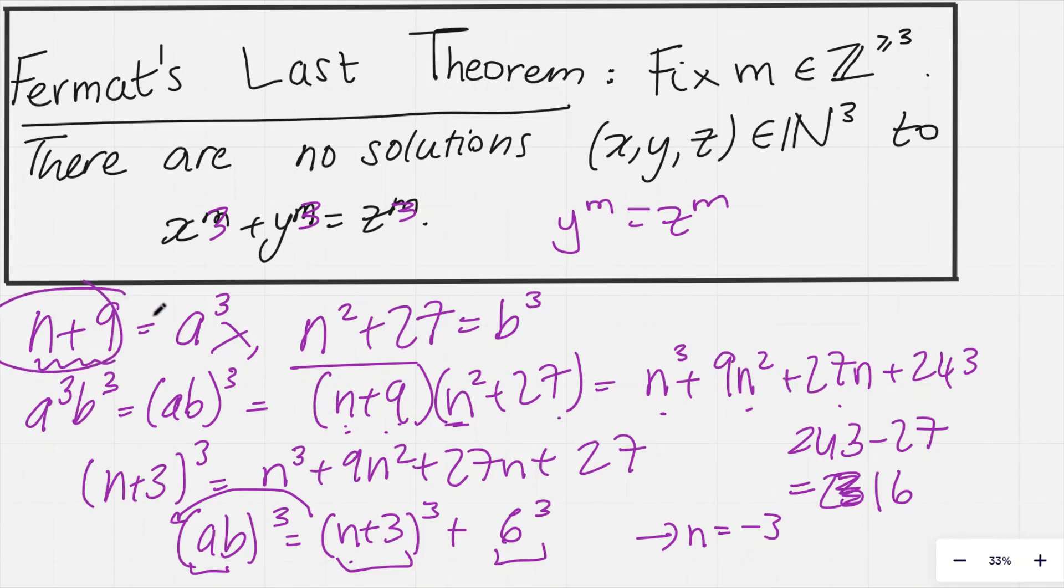How about n plus 9? Can that be 0? And, again, the answer is no, because if that was 0, we'd have n equals minus 9. And then that means that this number here, n squared plus 27, would be 81 plus 27, and that is 108. And 108 is definitely not a cube number. And so, that means that there are no solutions to our problem. In other words, there are no values n, such that n plus 9 and n squared plus 27 is a cube number by Fermat's last theorem.